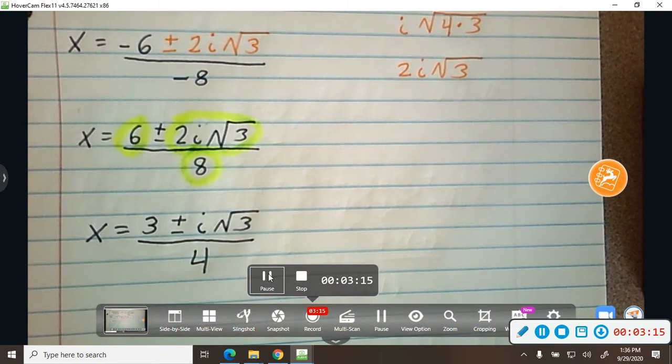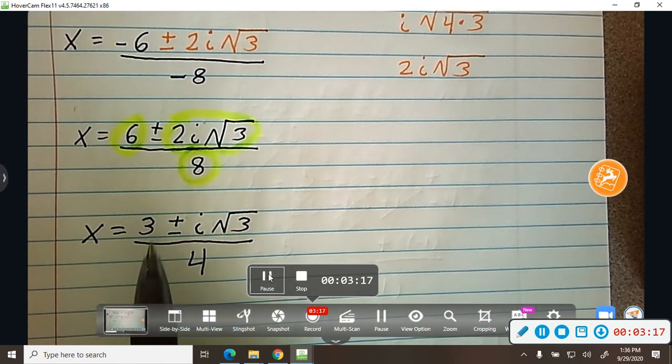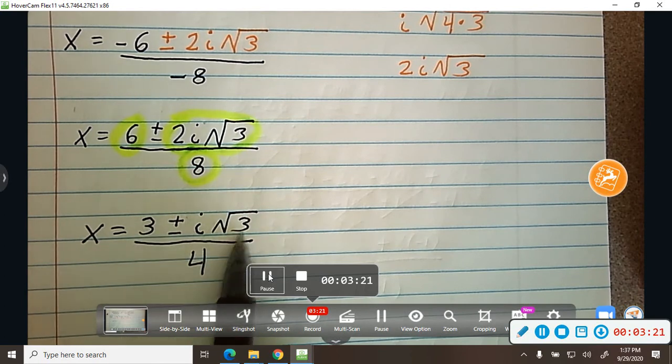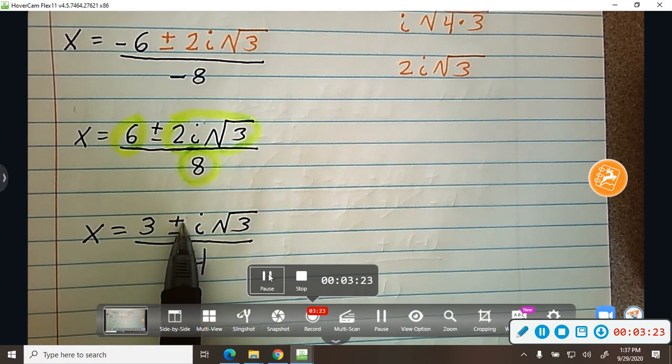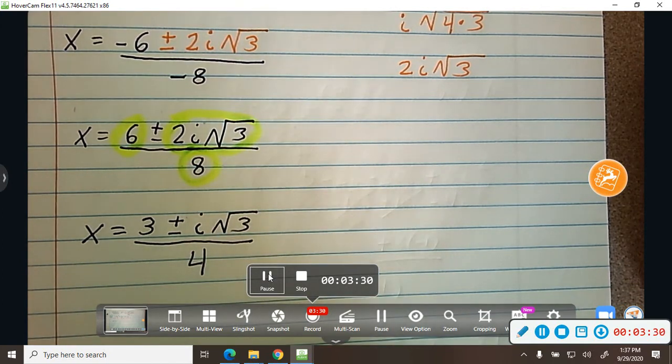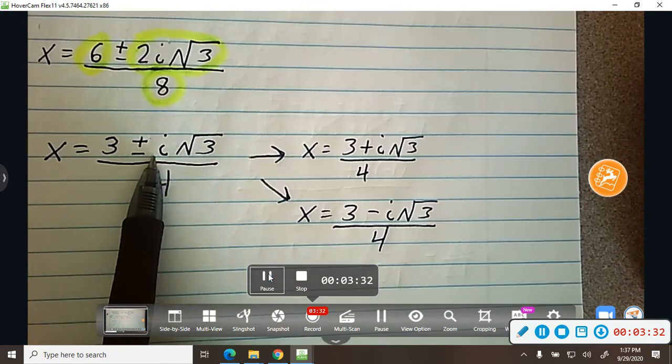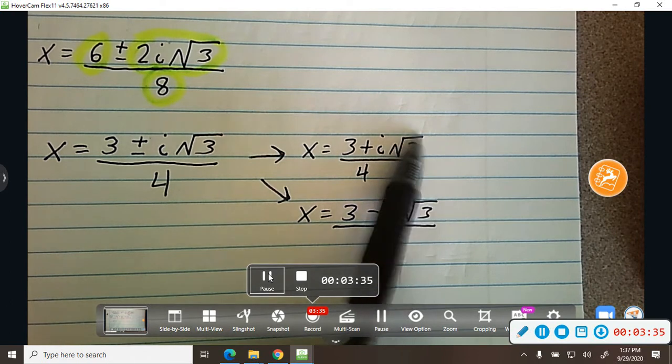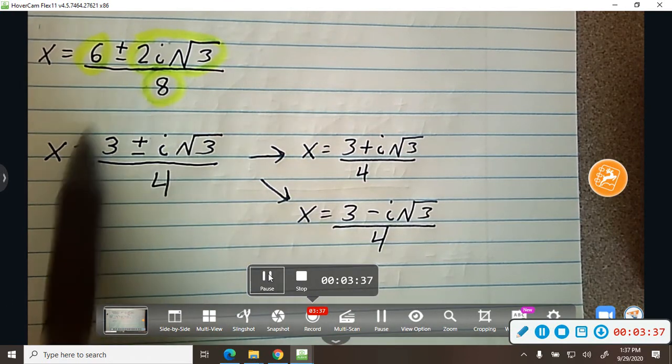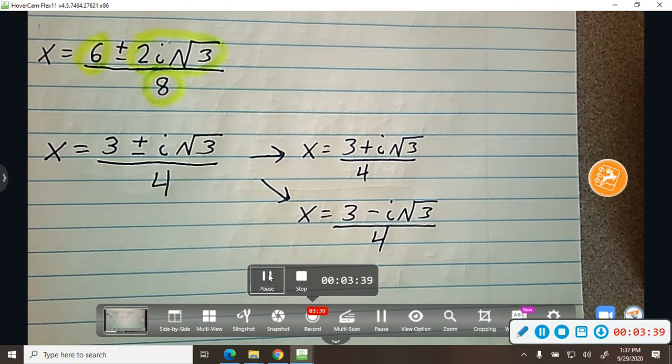And I get my solutions. So in simplified form, one of my solutions is 3 plus i square root of 3 over 4. And my other solution is 3 minus i square root of 3 divided by 4. So this represents two solutions, one with the plus, one with the minus. You do not have to write them twice. You could just write it like this. So this is my solution.